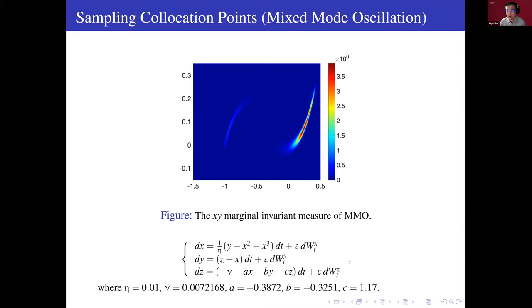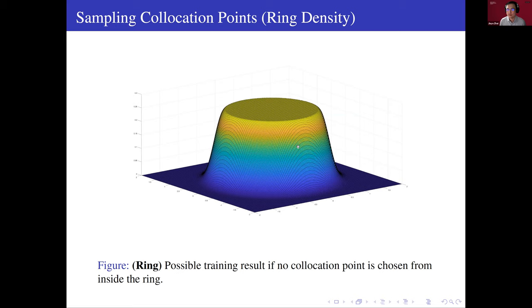So we want more reference points or collocation points to be located in the high density parts. Actually, this is similar to the adaptivity in traditional numerical methods. But if we choose them all from high density parts, it will lack the information from the low density parts. For example, if we consider this ring density example, if we choose all data and collocation points from outside the unit circle, we may get this kind of result because the neural network doesn't know what happens in the unit circle. This is also what we do not want. So we also need some points from low density parts or actually in all the regions.